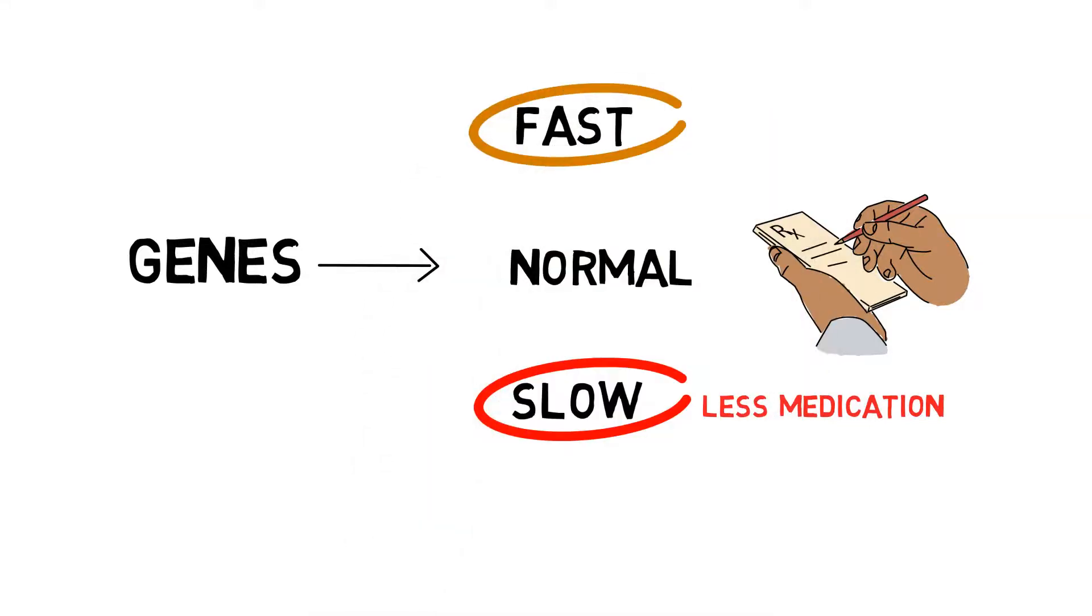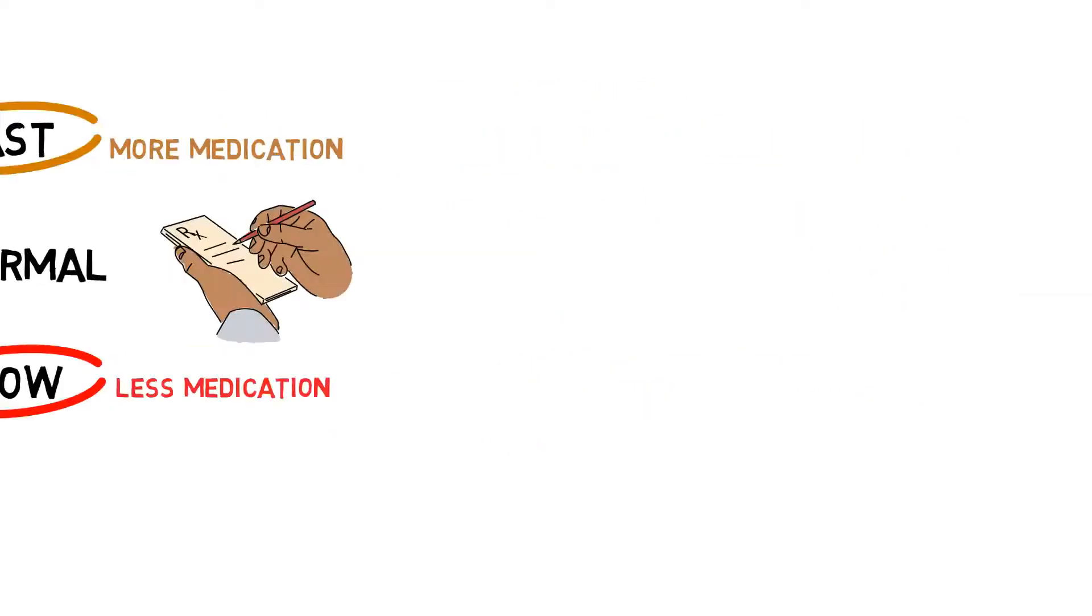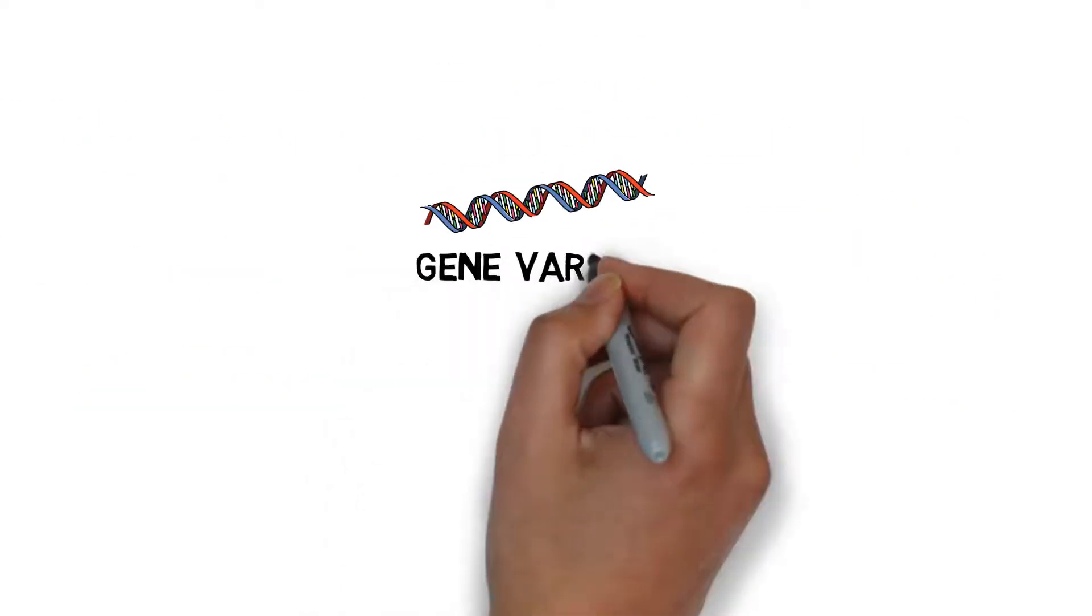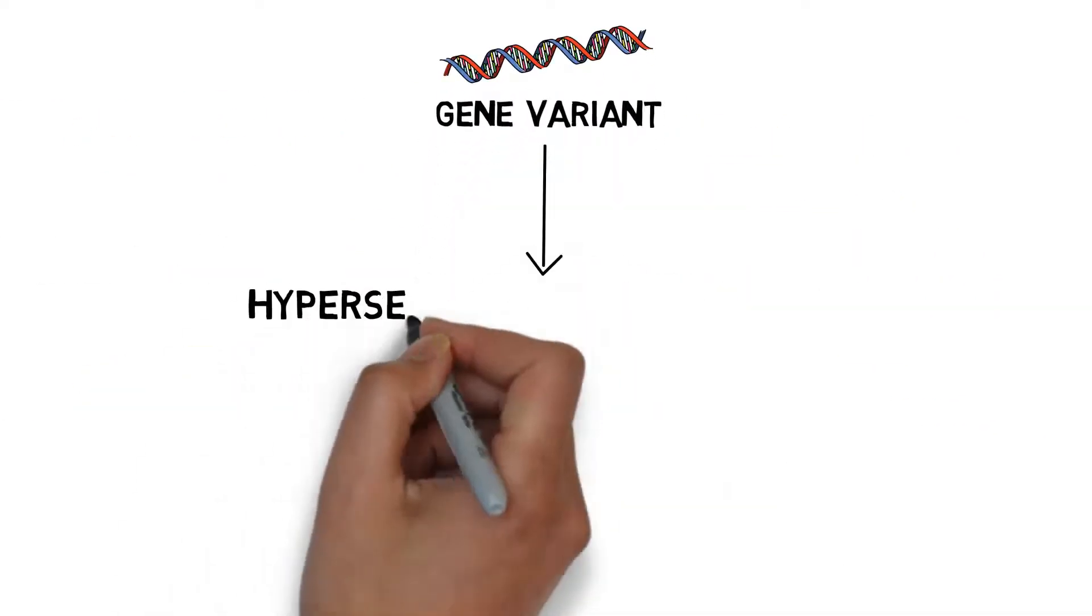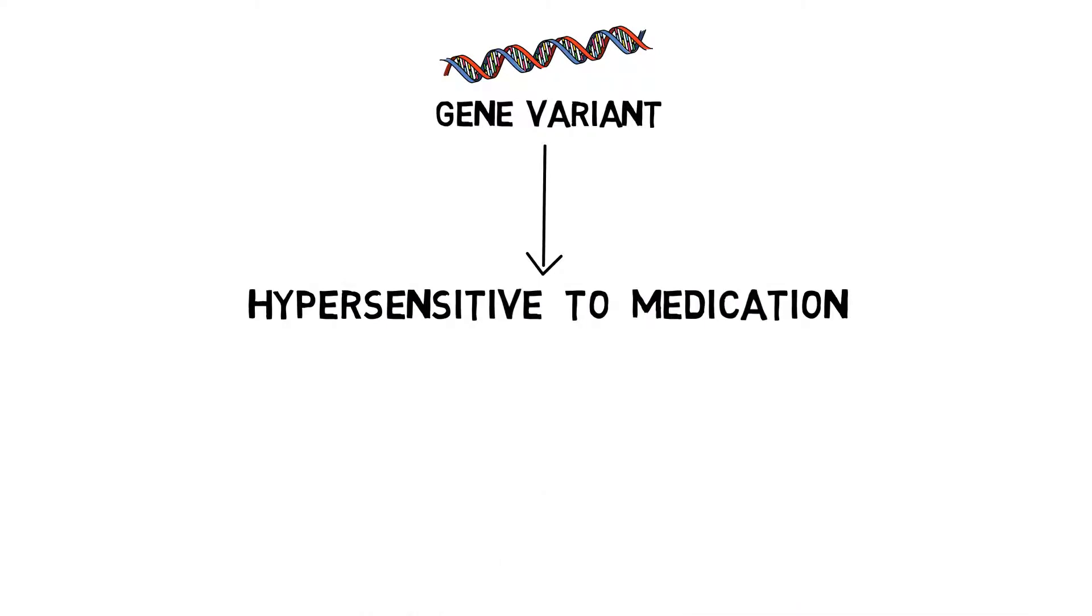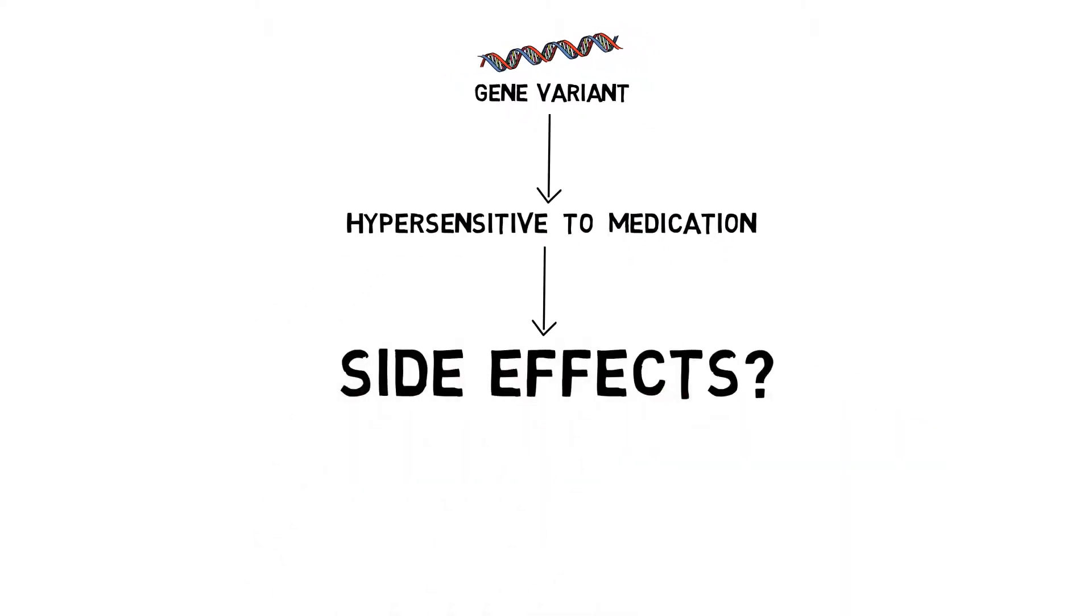Likewise, if you are a fast metabolizer, you may need more medication. Another example is when a person is found to have a gene variant that may cause them to be hypersensitive to certain drugs. These issues could cause serious side effects.